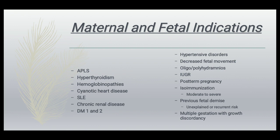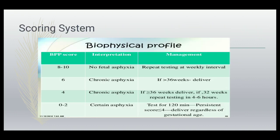The maternal and fetal indications for biophysical profile include: APLS, hyperthyroidism, hemoglobinopathy, cyanotic heart disease, SLE, chronic renal disease, diabetes, hypertensive disorders, decreased fetal movement, oligo or polyhydramnios, IUGR, post-term pregnancy, isoimmunization, mood disorder, previous fetal demise, unexplained or recurrent risk, and multiple gestation with growth discordancy.